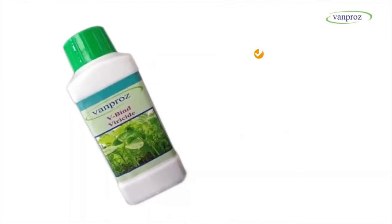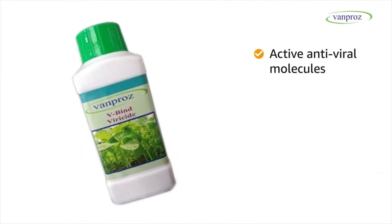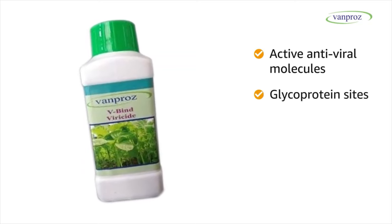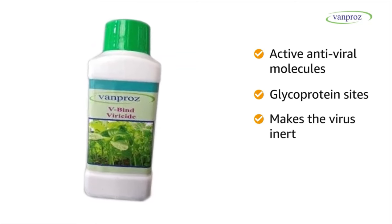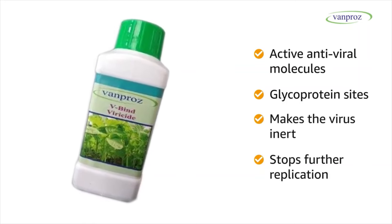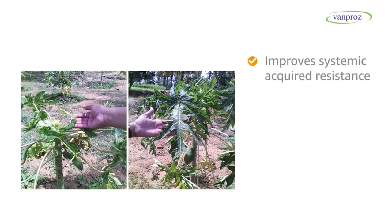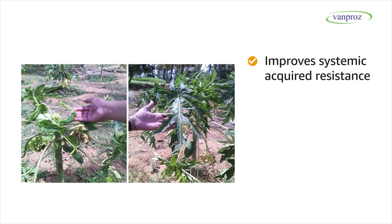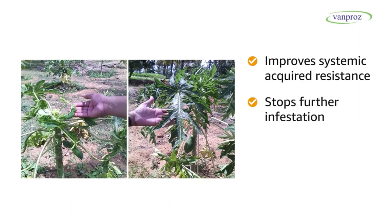The active antiviral molecules in V-bind viricide formulation act by binding with the glycoprotein sites of the virus, making the virus inert and stopping further replication in plants. V-bind also improves systemic acquired resistance of plants, binding and stopping further infestation.